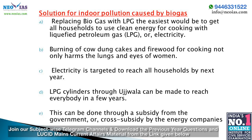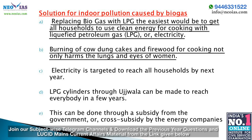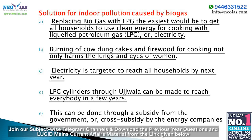A solution for indoor pollution caused by biomass is replacing it with LPG or electricity. The easiest approach is to get households to use clean energy for cooking with liquefied petroleum gas (LPG) or electricity. Burning cow dung cakes and firewood harms the lungs and eyes of women and is a major source of air pollution. Electricity is targeted to reach all households soon, and its use for cooking can be promoted. LPG cylinders through the Ujwala scheme can also be made to reach everybody with government subsidy.